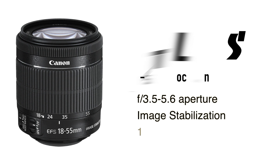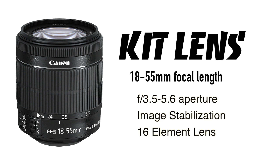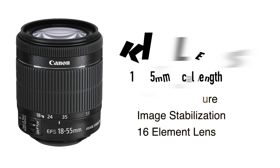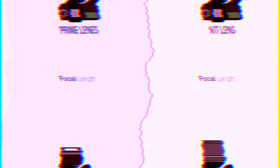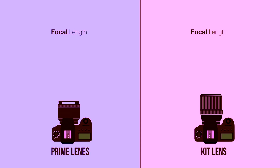The majority of lenses that come with Canon and Nikon are 18-55mm zoom lenses with an aperture range of f3.5 to f5.6, whereas the prime lens is a 50mm f1.8 fixed focal length lens, affordable at around $120. The major difference is that the kit zoom lens can adjust focal length, whereas the prime lens has a fixed focal length.